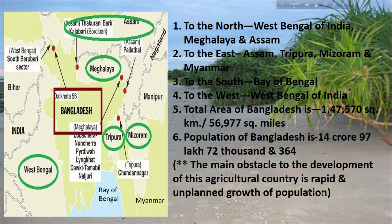Follow this map showing the boundary of India and Myanmar. To the north of Bangladesh is West Bengal of India, Meghalaya and Assam. To the east are Assam, Tripura and Mizoram. To the western part is entirely West Bengal of India. To the southern part of Bangladesh is the Bay of Bengal. And in the south-eastern corner is the neighboring country Myanmar.